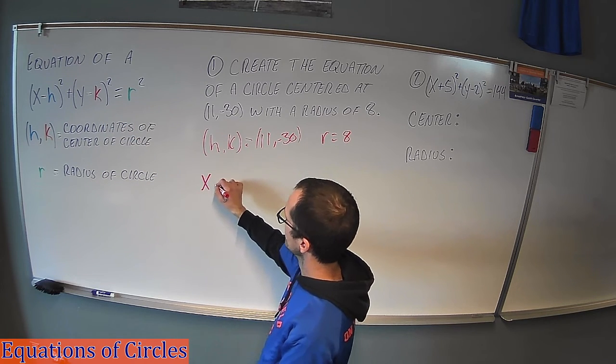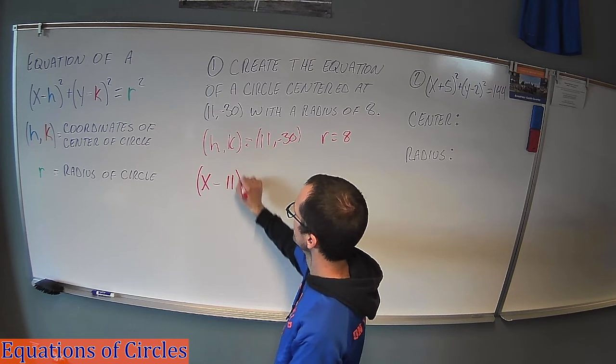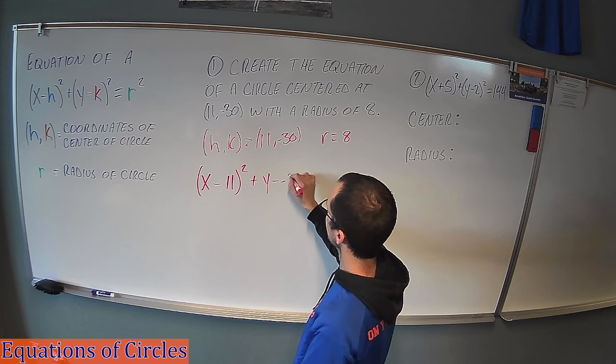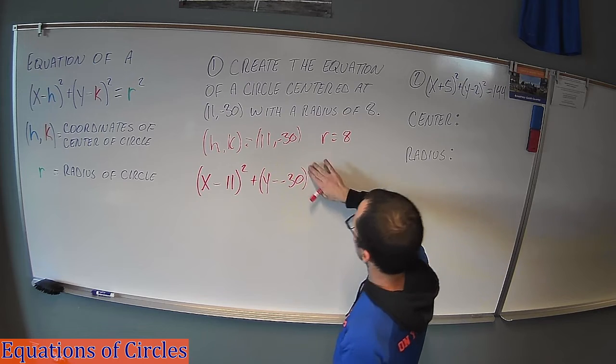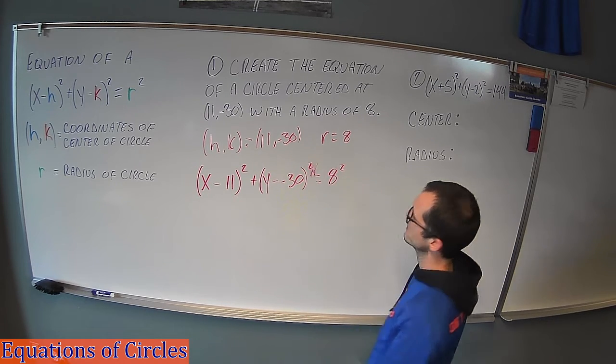So it's going to look like this. It's going to be (x - h) which is 11, plus (y - k) which is 30. We'll clean this up in a second. That's squared. And then r squared, so it's going to be 8².